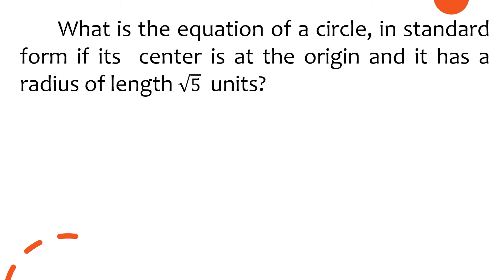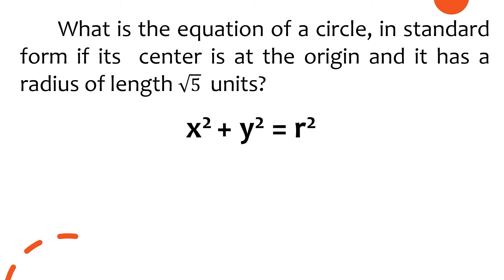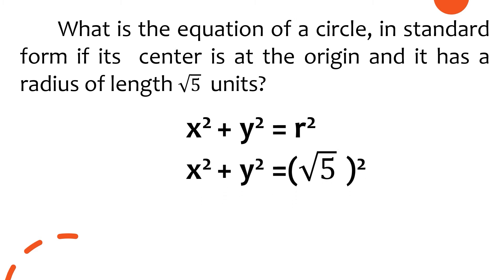Lastly, what is the equation of a circle in standard form if its center is at the origin and it has a radius of √5 units? The standard form is the same since the center is at the origin. Substituting r = √5, we get x² + y² = (√5)². Simplifying — since squaring cancels the radical — the final answer is x² + y² = 5.